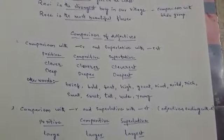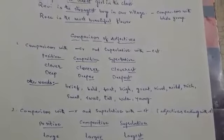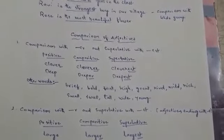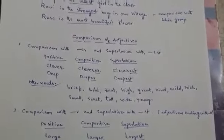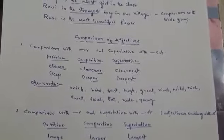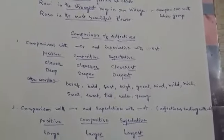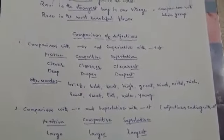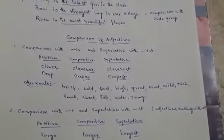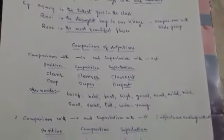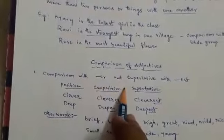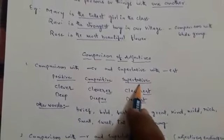Before we are going to start degrees of comparison, it is necessary to know about the forms of adjectives. You all know very well, like a verb, an adjective is also having three different forms, namely positive, comparative and superlative.